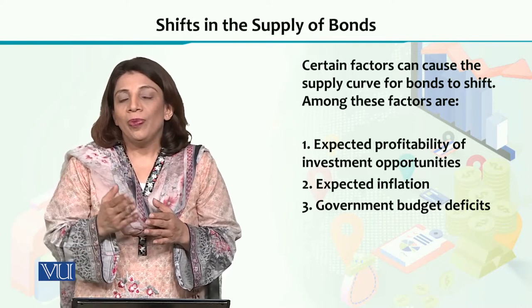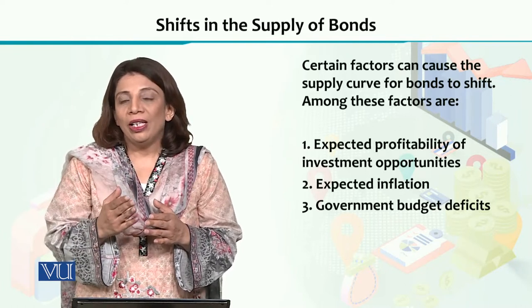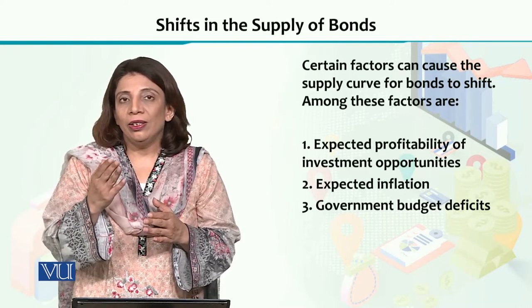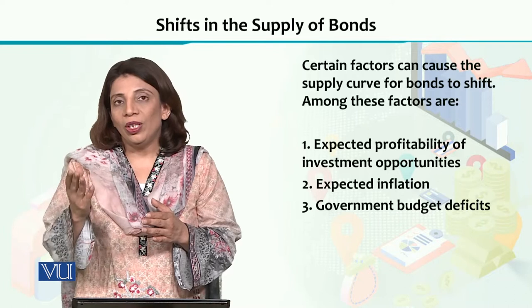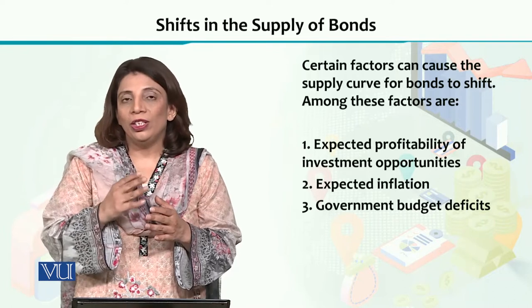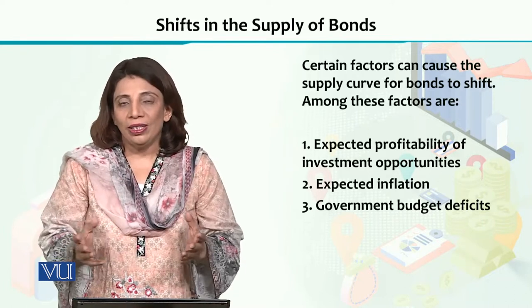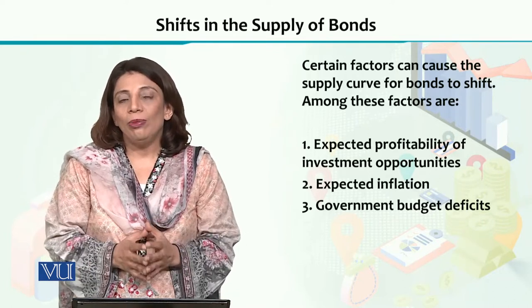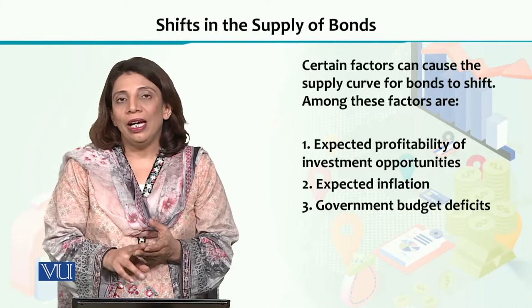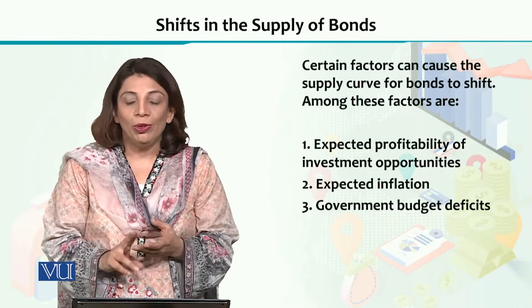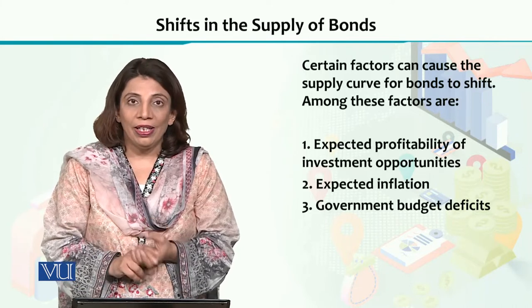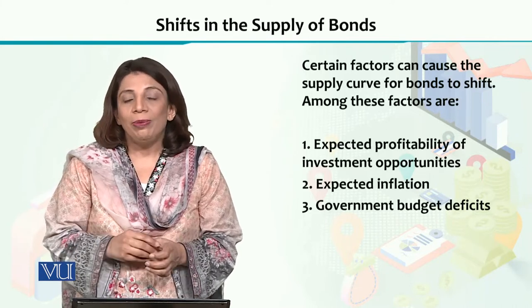So the supply curve can shift forwards or backwards due to a number of factors. The three important factors that we are going to discuss are as follows.